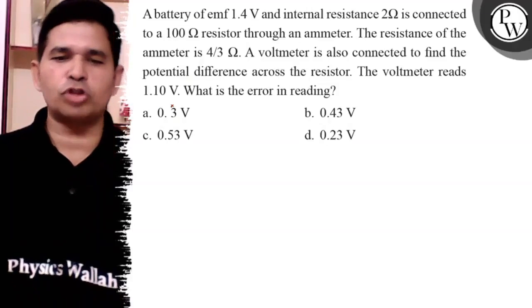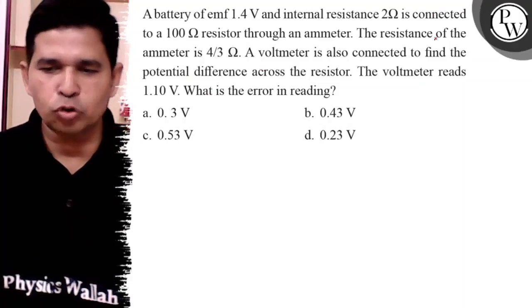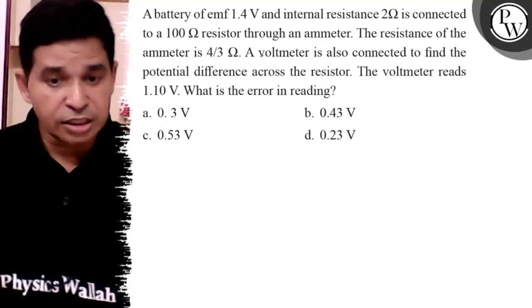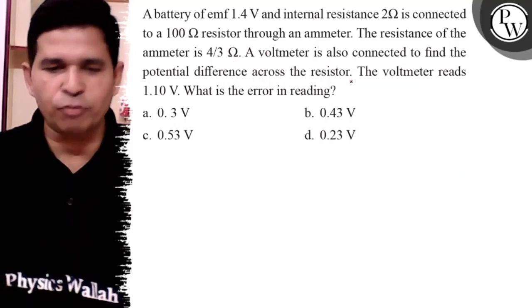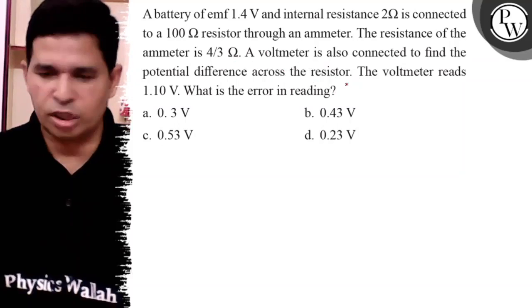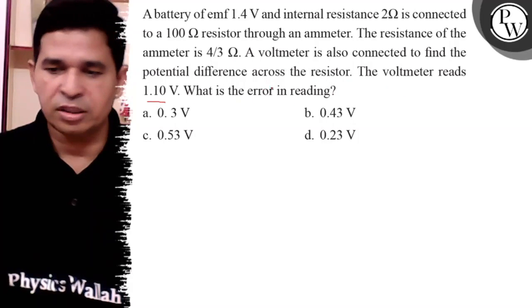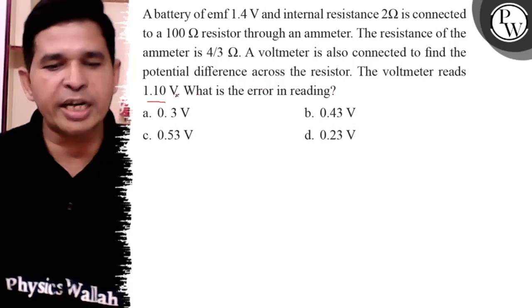Hello Bachchon, let us see this question. A battery of emf 1.4 volt and internal resistance 2 ohm is connected to a 100 ohm resistor through an ammeter. The resistance of the ammeter is 4/3 ohm. A voltmeter is also connected to find the potential difference across the resistor and the voltmeter reads 1.1. Because the voltmeter has finite resistance, this is the V dash for faulty reading.